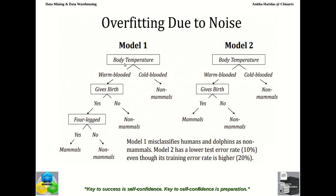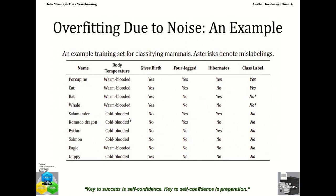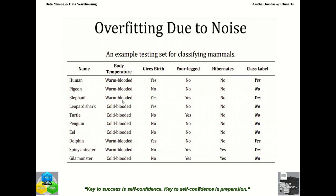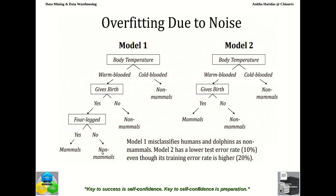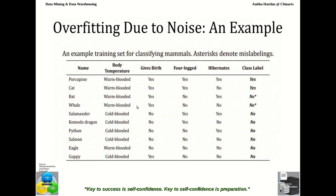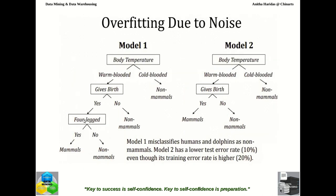Using that training data, the decision tree is constructed as follows. It first checks body temperature: if warm-blooded, it checks whether the animal gives birth. If yes, it checks whether it is four-legged. If yes, it is classified as a mammal. If not four-legged, it is classified as non-mammal. The machine reads the data from the training set and constructs the tree based on that information. We know that a two-legged or legless animal like a whale may also be a mammal, but the training data does not capture this, so the machine learning algorithm constructs the tree accordingly.